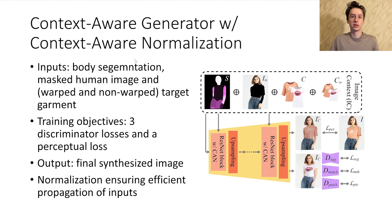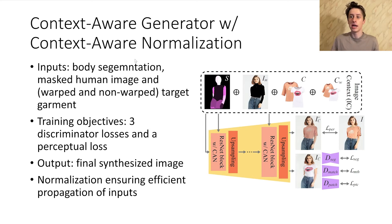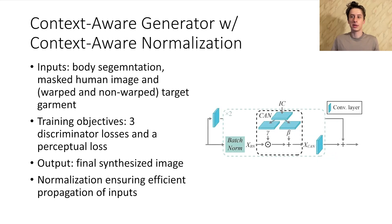Its core strength is the utilization of multiple inputs: an original input image, warped and non-warped target garments, and the body segmentation map. We also use multiple losses, each tailored to ensure realistic generation of a specific aspect of the final image: a segmentation discriminator loss that ensures body parts are rendered correctly, a matching discriminator loss which ensures that the garment on the generated image matches the target one, and a patch discriminator loss that furthers the realistic generation of the neck area and arms. In addition, we also use a perceptual loss to generate images similar to the original. We introduce context-aware normalization, inspired by SPADE, which accepts our inputs and normalizes activations before every convolutional layer, ensuring that information is propagated efficiently through the generator.